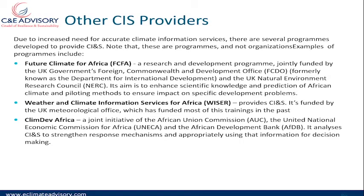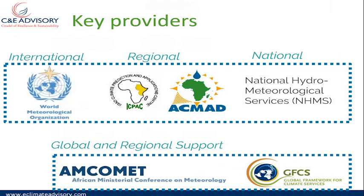This slide summarizes the three levels of climate information providers: the World Meteorological Organization at the global level; regional bodies such as ACMAD and ICPAC; and at the country level, National Hydrometeorological Services. There are also other bodies including the Global Framework for Climate Services and the African Ministerial Conference on Meteorology, which is regional but globally influential — when they speak, even the WMO has to listen.